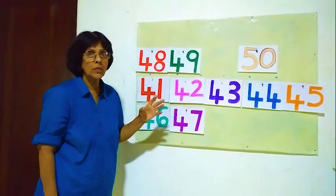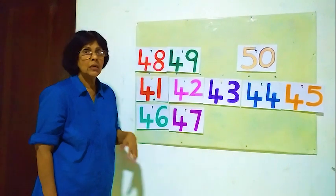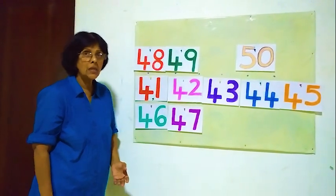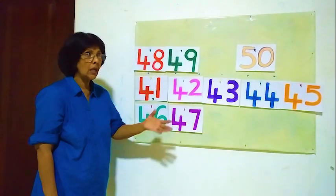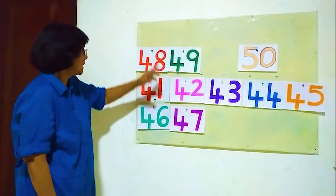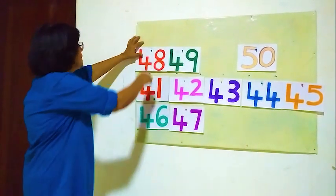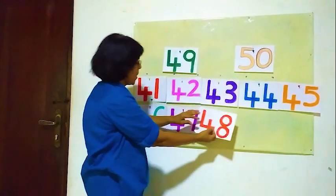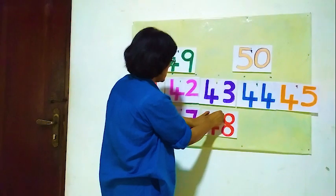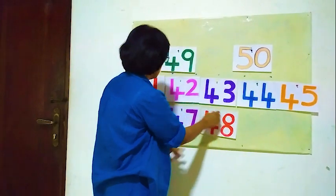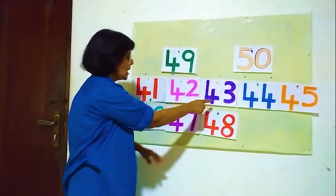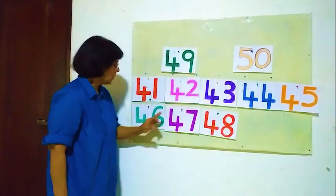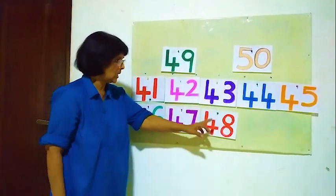After 47, the next number is 48. Where's 48? Here 48. Now 48. So: 41, 42, 43, 44, 45, 46, 47, 48.